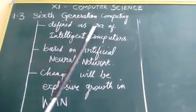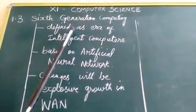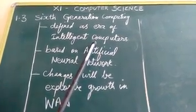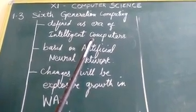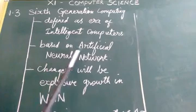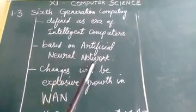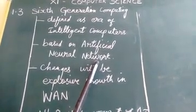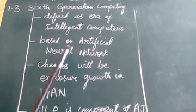About 6th generation computing: it is defined as intelligent computers. These computers can think and work. Developers are building artificial neural networks — modeled after the human body's neural system — to control and enable proper computer work.